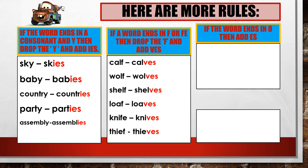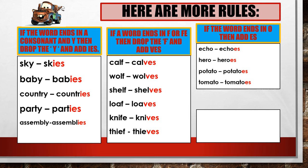If the word ends in O, then add ES. These are some examples: one echo, many echoes. One hero, many heroes. One potato, many potatoes. One tomato, many tomatoes.